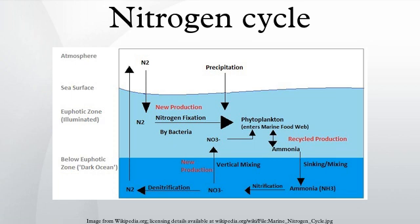Nitrous oxide has risen in the atmosphere as a result of agricultural fertilization, biomass burning, cattle and feedlots, and industrial sources. N2O has deleterious effects in the stratosphere, where it breaks down and acts as a catalyst in the destruction of atmospheric ozone. Nitrous oxide is also a greenhouse gas and is currently the third largest contributor to global warming after carbon dioxide and methane. While not as abundant in the atmosphere as carbon dioxide, it is, for an equivalent mass, nearly 300 times more potent in its ability to warm the planet.